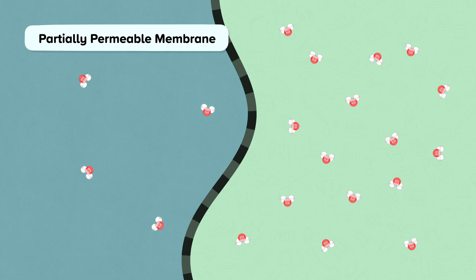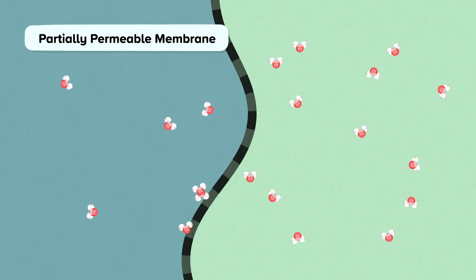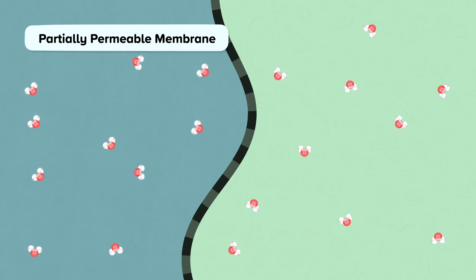As the net movement of particles is from a higher concentration to a lower concentration, and large molecules can't move across the cell membrane because they're too big, the water will flow into the cell until the number of water molecules inside the cell and outside the cell is balanced. Remember, some water molecules will still flow out of the cell, but it is the net — which means overall — movement that we're interested in.